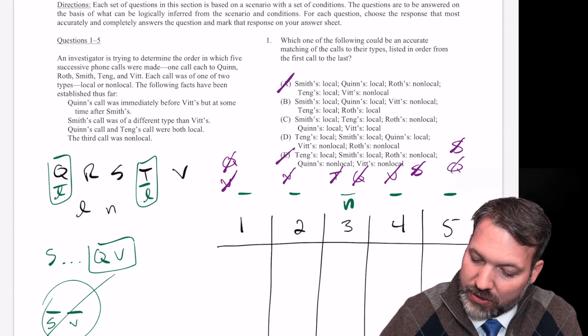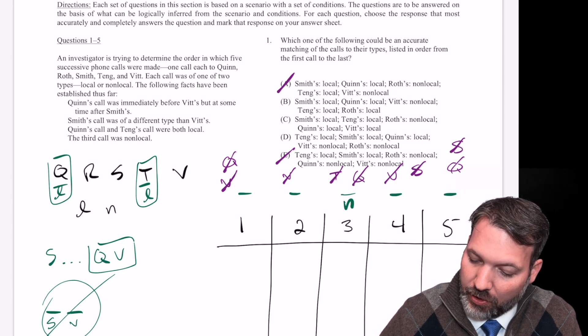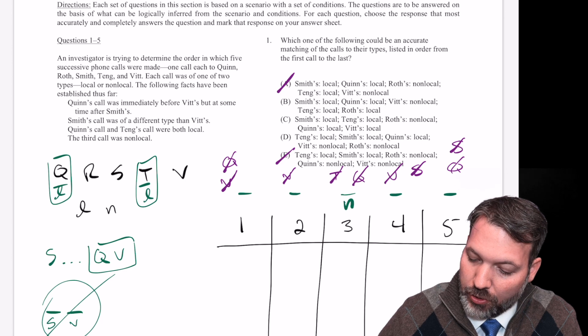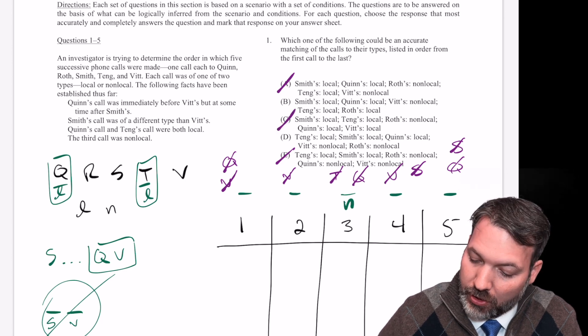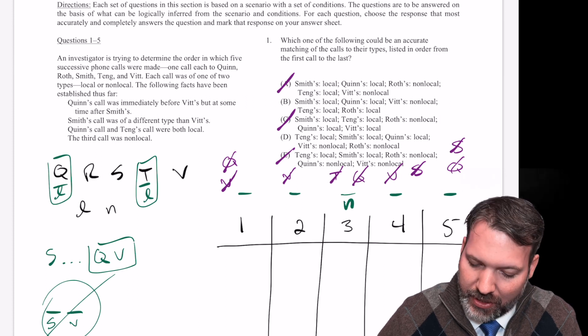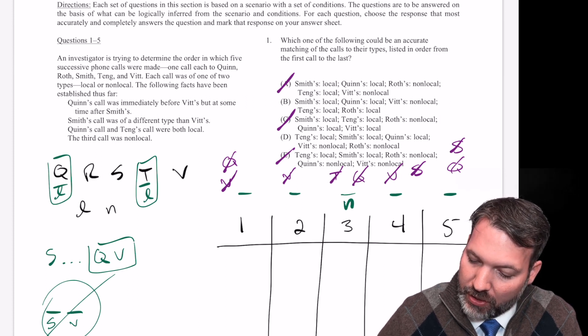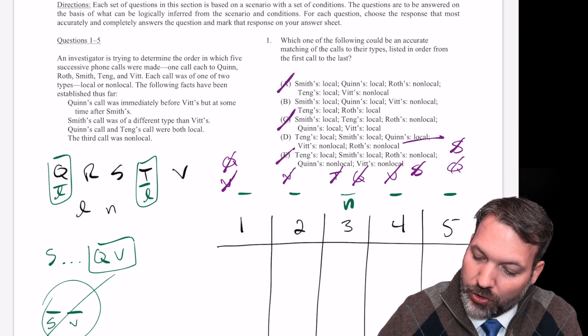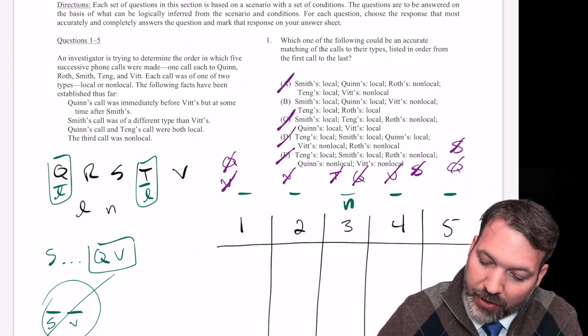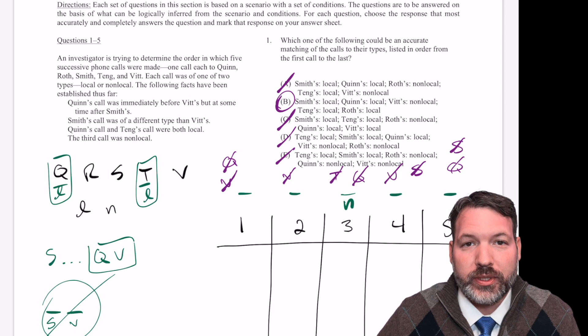S and V always have to be different. Well, B has S local, V non-local, that's good. C has S local, V local, that's no good. D has S local, V non-local, that is good. So we're down to B versus D. And then the third call is non-local. B is good, D is no good. Third call local. And so I can cross off D, circle answer choice B. Let's get into our specific questions.